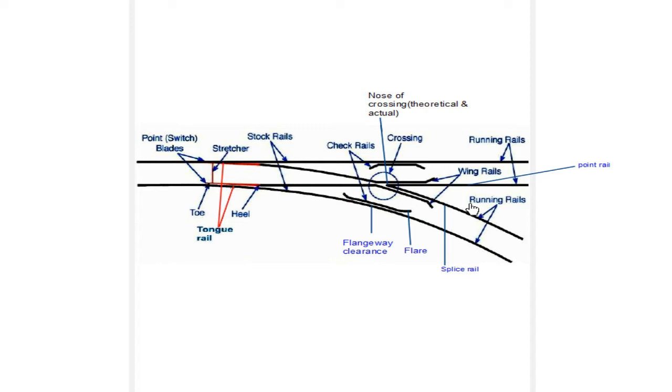Let's start the third module today, that is Railway Operation and Control. The topics to cover in this module include points and crossing, design features of turnout, station yard and marshalling yard, and signaling and track circuiting. In today's class, we'll learn the first topic, which is points and crossing.